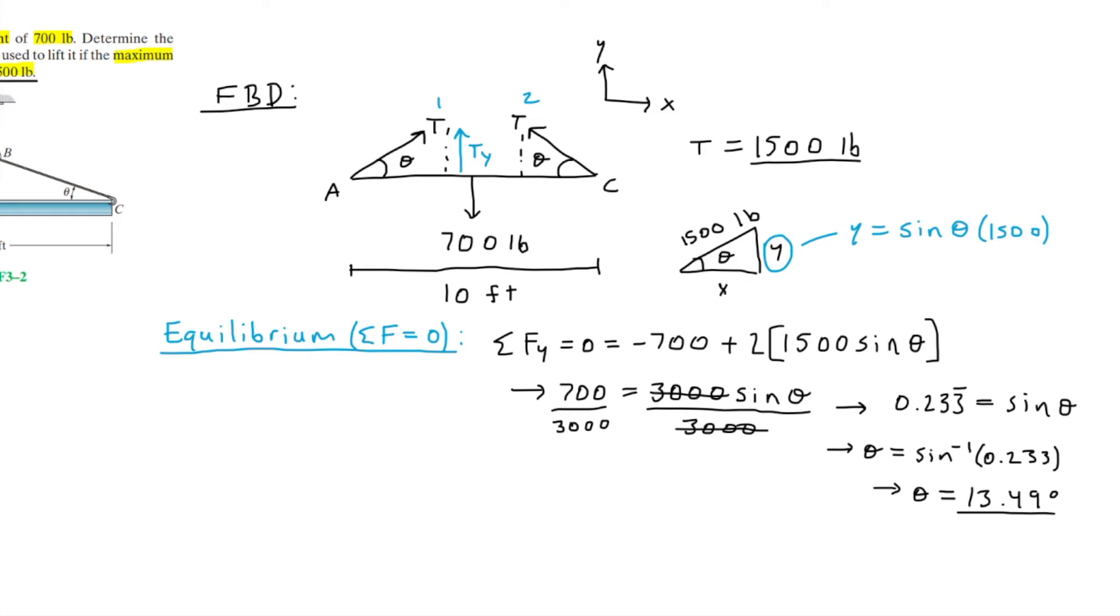So now knowing the angle theta, we can find the length of the cable. I'm going to redraw the triangle. For the bottom, I'll add 5 feet, which is half the length of the beam, and substitute the value of theta.